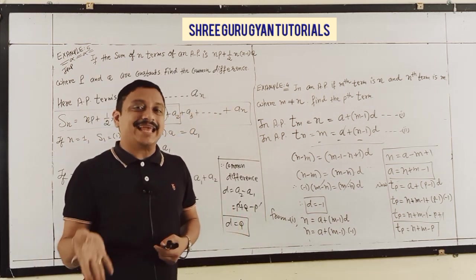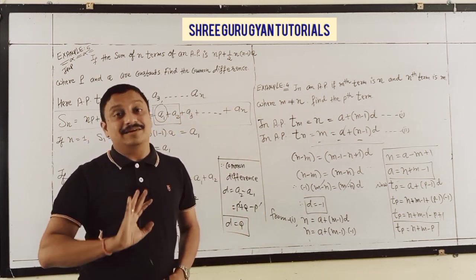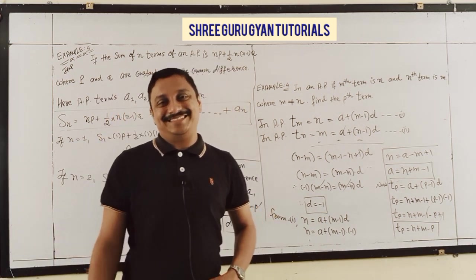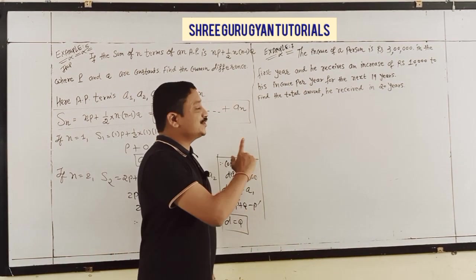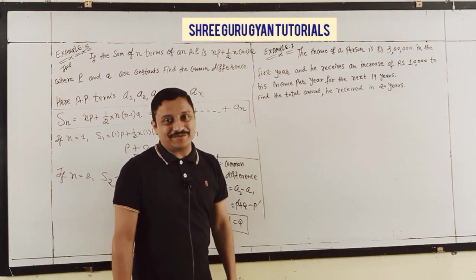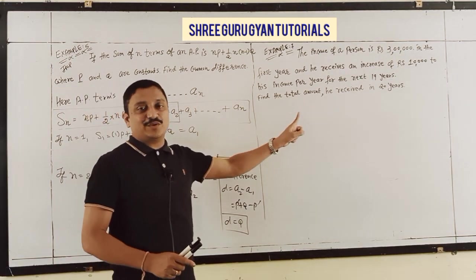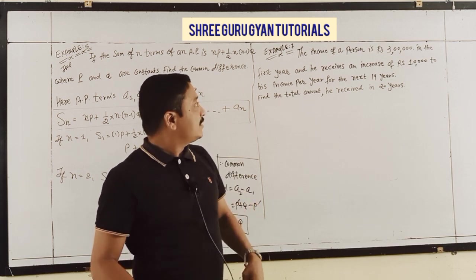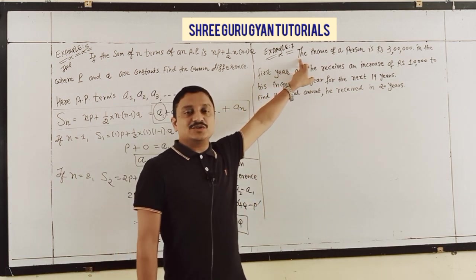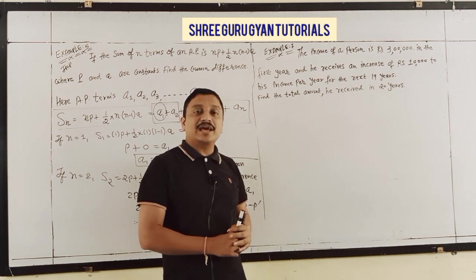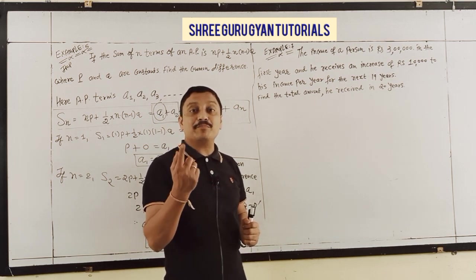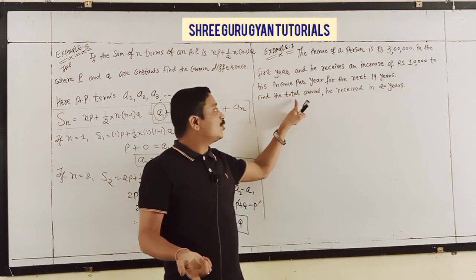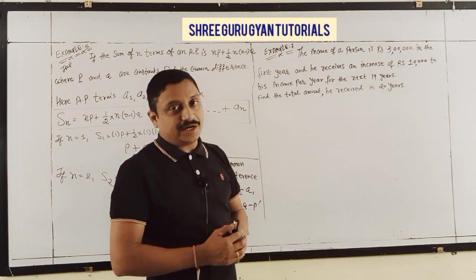Example 6 is cancelled according to our syllabus, so I won't explain it. Moving to Example 7: A person's income is Rs. 3 lakhs in the first year, and he receives an increase of 10,000 per year for the next 19 years. Find the total amount received in 20 years.